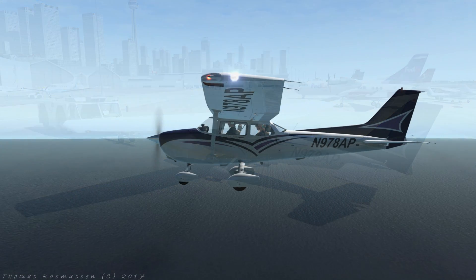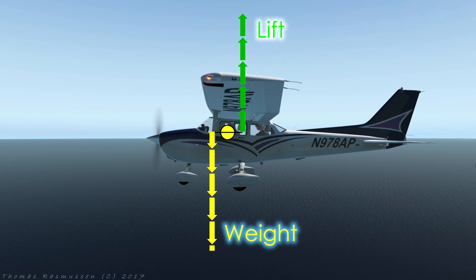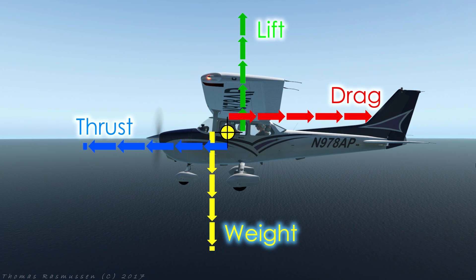First some theory. In straight and level flight there are four basic forces acting on the aircraft: weight, lift — in level flight this will equal weight — drag, and thrust, which at a constant speed will equal drag. Notice that these forces do not all line up with each other and therefore they will create rotational moments or couples.